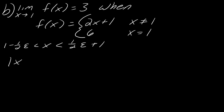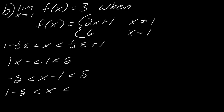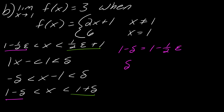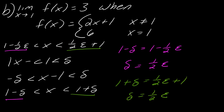On to the delta. I'm going to use x minus c is less than delta, where c equals 1. So: negative delta is less than x minus 1, which is less than delta, giving us 1 minus delta and 1 plus delta. Setting each side equal: 1 minus delta equals 1 minus one-half epsilon, so delta equals one-half epsilon. In green: 1 plus delta equals one-half epsilon plus 1, so delta equals one-half epsilon. In this case they're the same, so it doesn't matter which one you choose. The delta for this specific limit is one-half of epsilon.